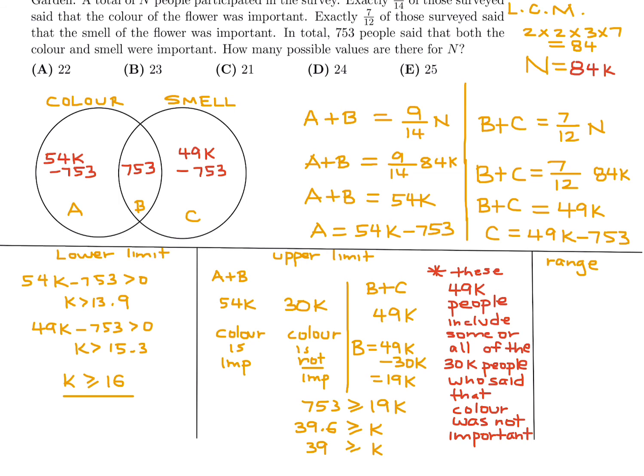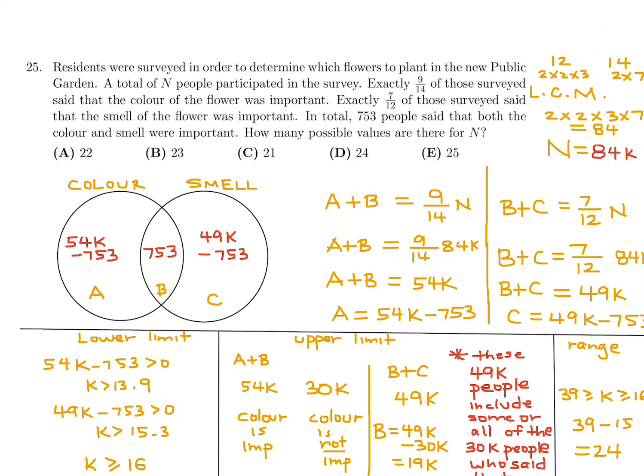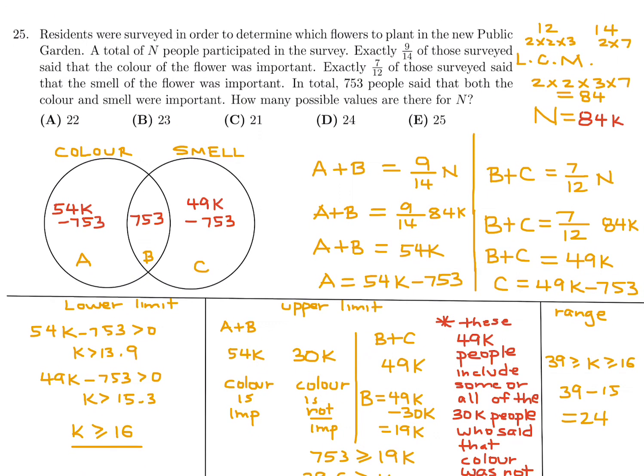So combining, that means K is going to be greater than 16, but less than or equal to 39. Greater than or equal to 16 or less than or equal to 39. So every number from 16 to 39. And that gives me 39 minus 15, which is 24 possible values for K. And each value of K gives me one corresponding value of N. So that's 24 values for K, 24 values for N. And therefore number 25, the answer is D.